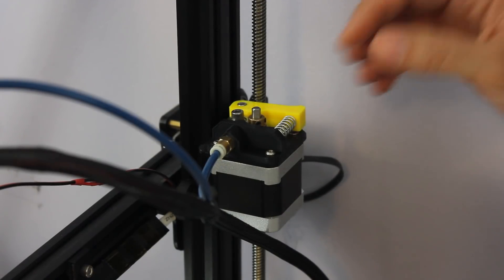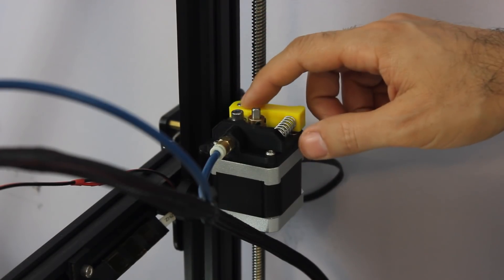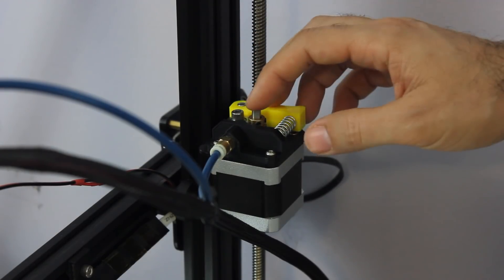So I was having some under-extrusion issues on my CR-10, and after checking over a few things, I figured out that it was actually the extruder. This screw right here had backed out some and it was causing the filament to slip going through the gear.